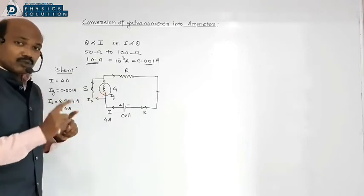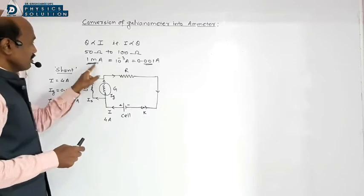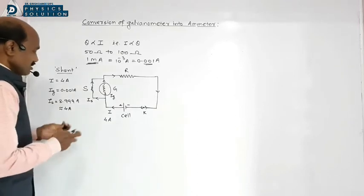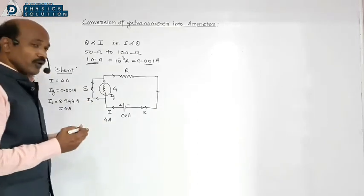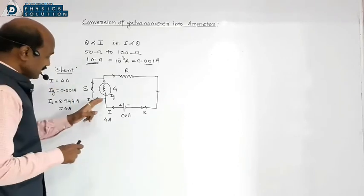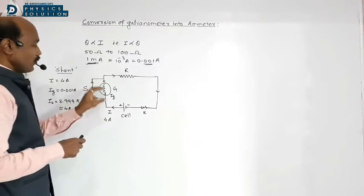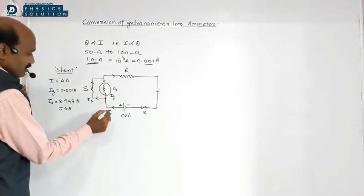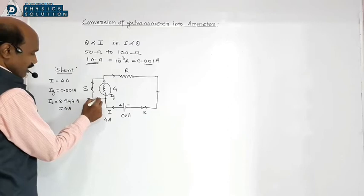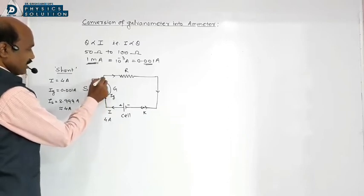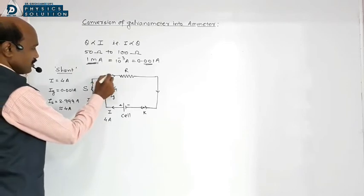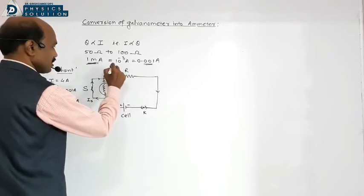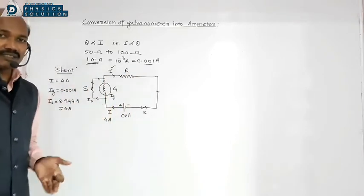At junction point A, current I splits into IS (through shunt) and IG (through galvanometer coil). They recombine at point B. The galvanometer coil shows full scale deflection for 1 mA. This arrangement — a galvanometer with a low value resistance connected in parallel — is known as an ammeter. A galvanometer can be converted into an ammeter by connecting a low value resistance in parallel to it.